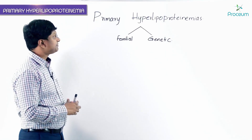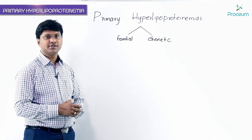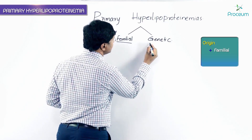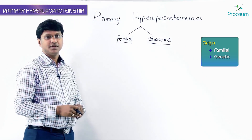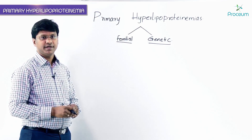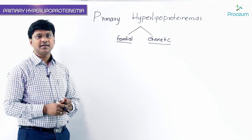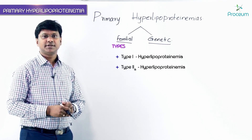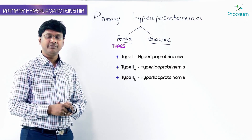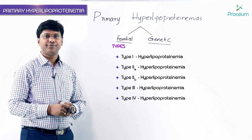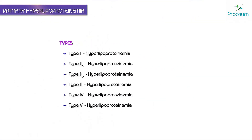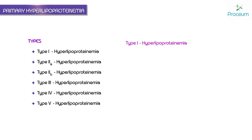Primary hyperlipoproteinemias are either familial or genetic in origin. There are various types: type 1, type 2a, type 2b, type 3, type 4, and type 5 hyperlipoproteinemias.